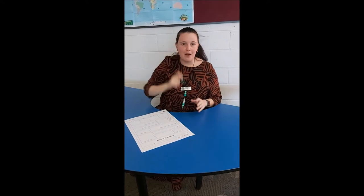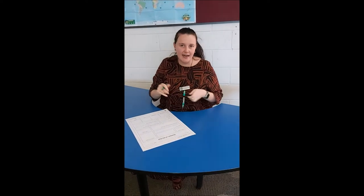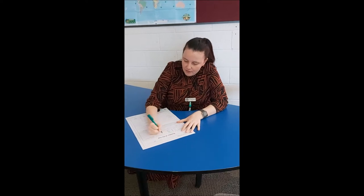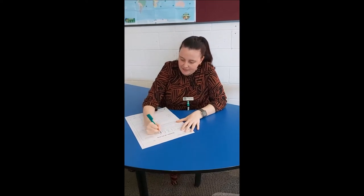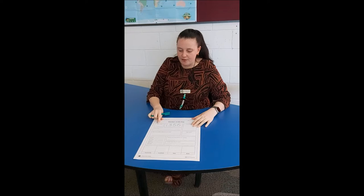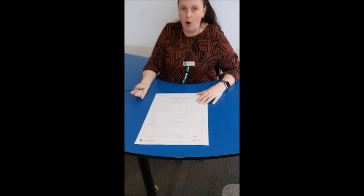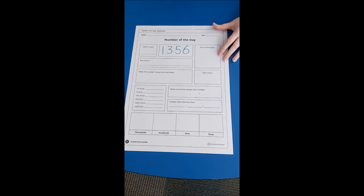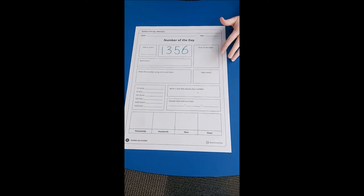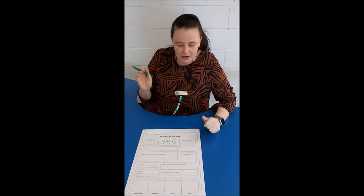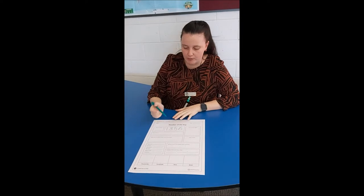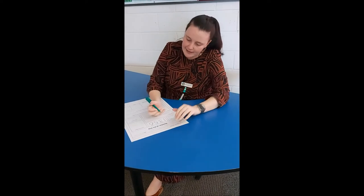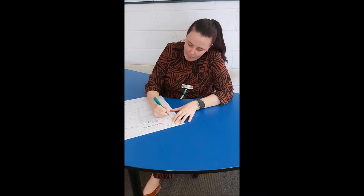So the first number — the number of today — is 1,356. The first thing we need to have a look at: is it odd or even? I'm going to look at the last digit, and I know that six is an even number because I can break it into two even groups. So the number 1,356 is an even number.